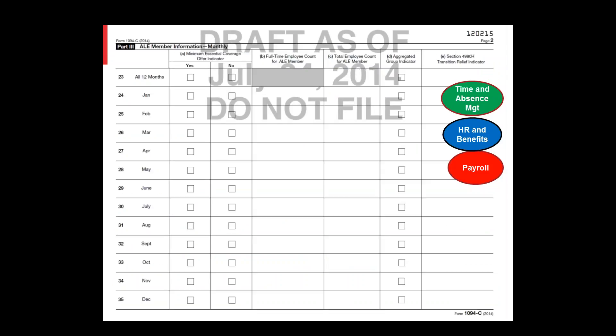The second page of the 1094-C covers Minimum Essential Coverage — which is not necessarily your regular fully insured plan — plus full-time employee count, total employee count for ALE members, and the Aggregated Group Indicator for control groups. Notice this is month by month. Companies with a steady workforce can use all 12 months as exactly the same to simplify the form. If you use the 98% offer method you have a little less to provide. If you don't have a good tracking system — and you need time and attendance, HR and benefits, and payroll — all three are really being used now to track this information on a month-to-month basis.